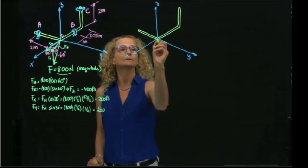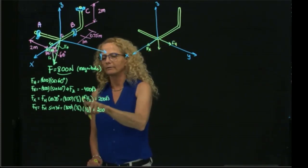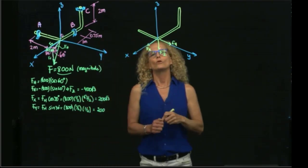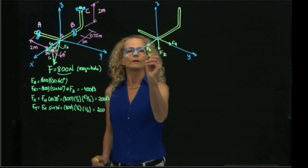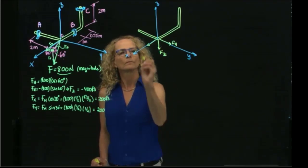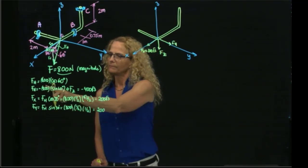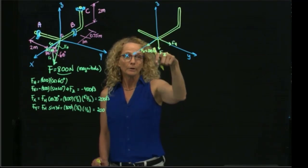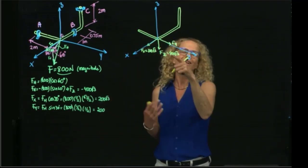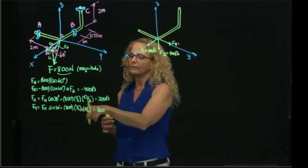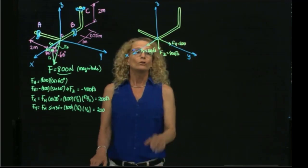So I have active forces Fx, Fy, and Fz. We know Fz is negative. I have three components that are my active forces. Fx is 200 square root of 3, Fz is negative — but since I already put the arrow down, I already took into consideration the negative value. And Fy is 200. These are all in newtons. Those are my active forces.